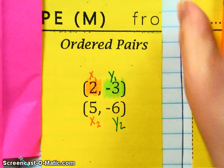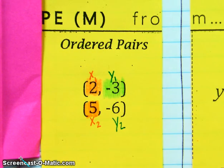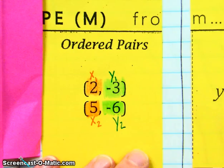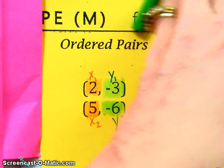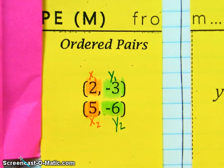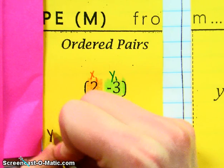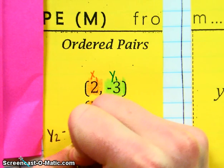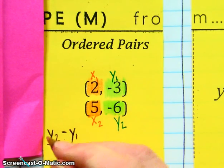So X sub 2 and Y sub 2. And the second one, I'm going to use the same colors, but I'm going to use a highlighter instead. Now, our formula for all of this is Y sub 2 minus Y sub 1 over X sub 2 minus X sub 1.